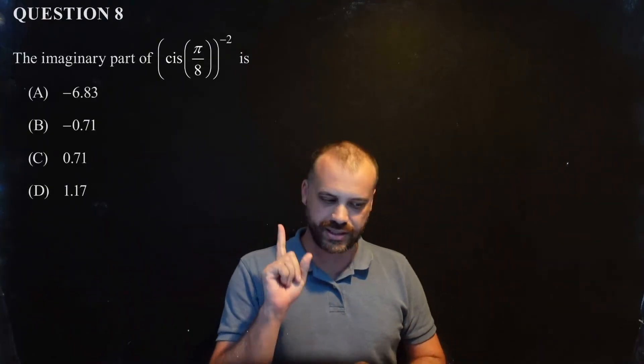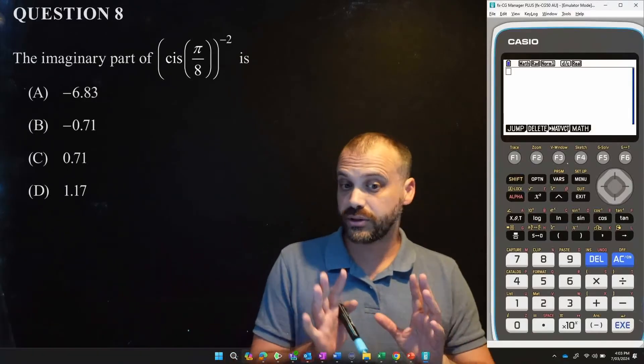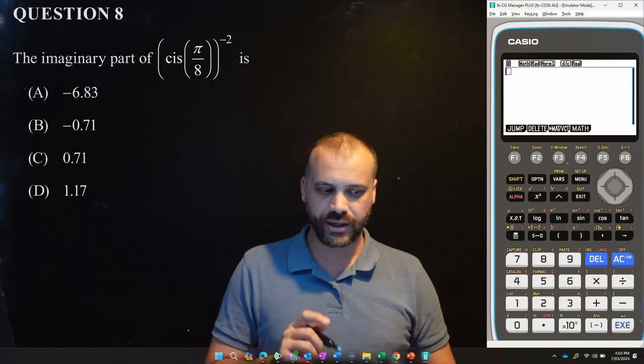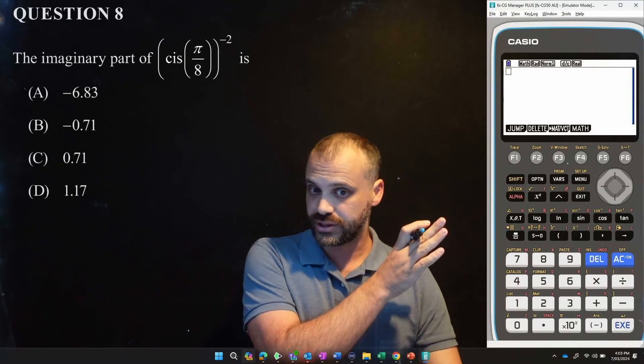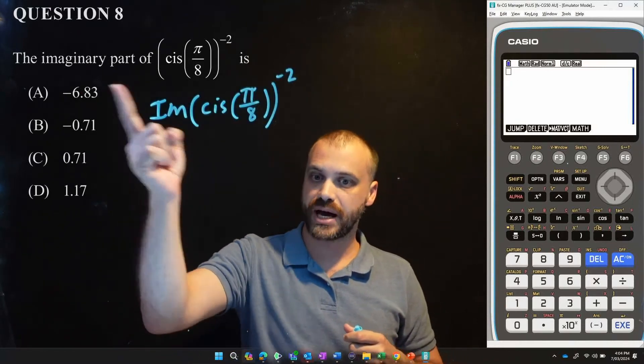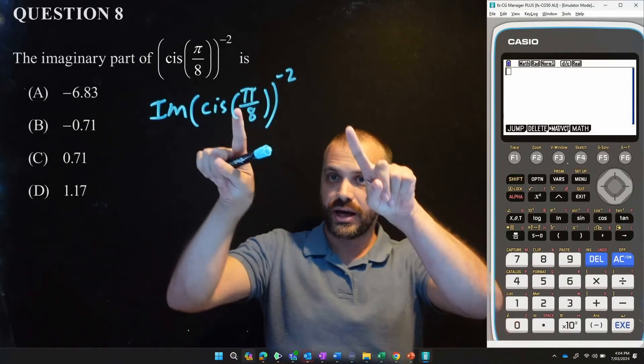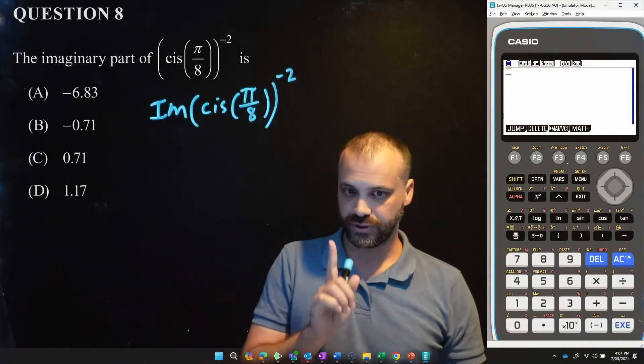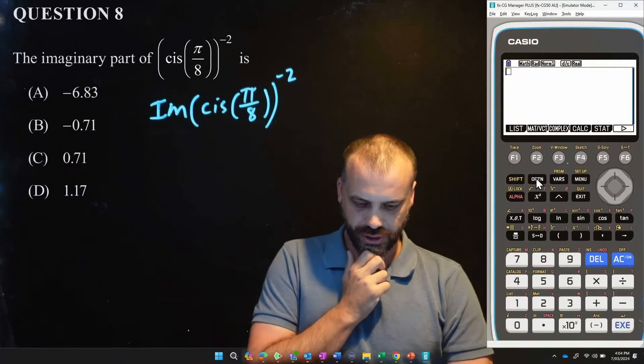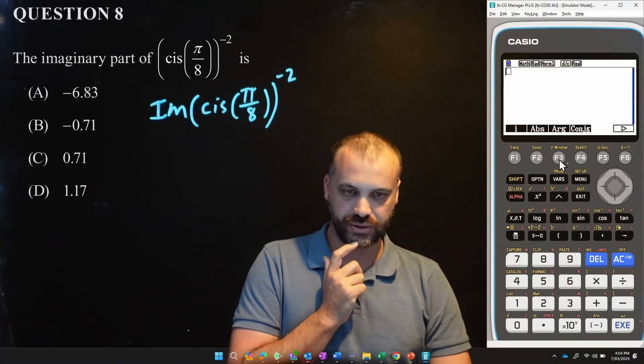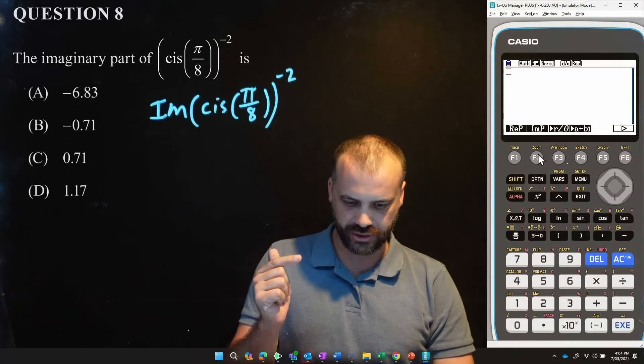Alright. Now, here we have another one. Now, this is a tech active paper, and I haven't opened my calculator yet. Pretty impressive, but it's time. Okay. So, I'm not going to muck around here. I'm going to enter this directly into my calculator. Now, this is the sort of thing that you forget how to do if you don't practice it occasionally. So, make sure you pay attention to this one. Alright. So, this is what we're trying to calculate. The imaginary part, the imaginary part of cis pi on 8, that complex number, but that complex number raised to the power of negative 2.